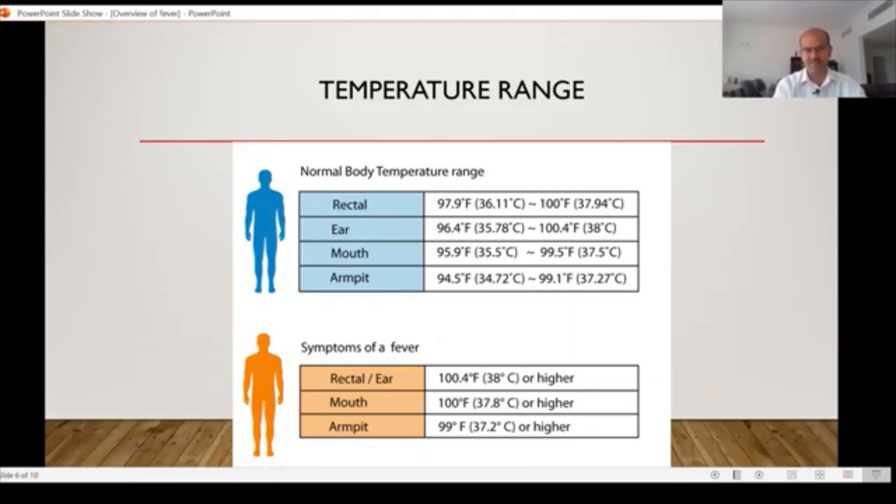The rectal thermometer and the ear thermometer readings are going to match the core temperature more or less, and the ear thermometer may be a little lower because of the exposure to the environment. You can see that the range in Fahrenheit is around 98 to 100, and up to 100.4 for the ear thermometer.